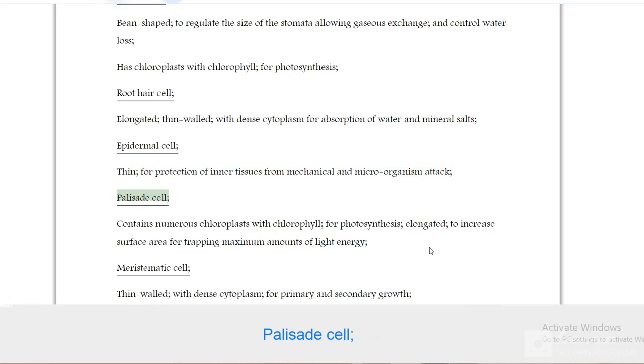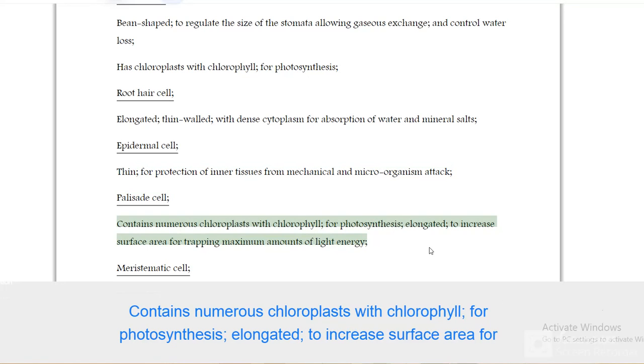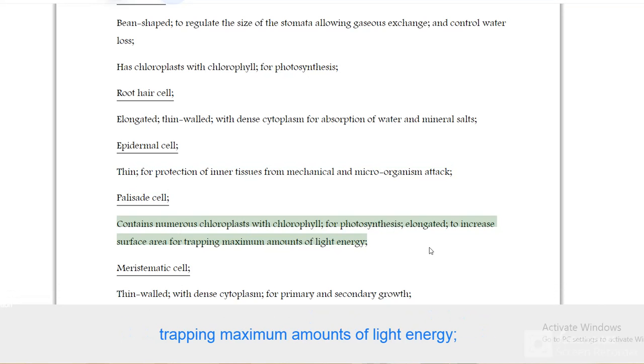Palisade cell contains numerous chloroplasts with chlorophyll for photosynthesis, elongated to increase surface area for trapping maximum amounts of light energy.